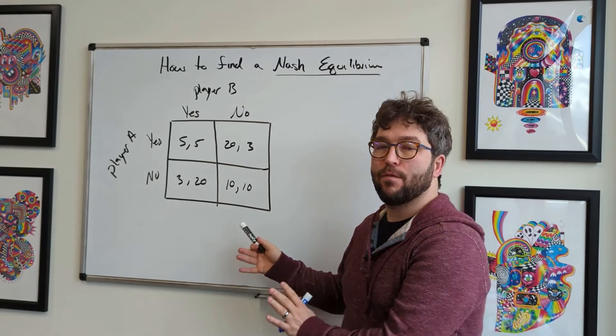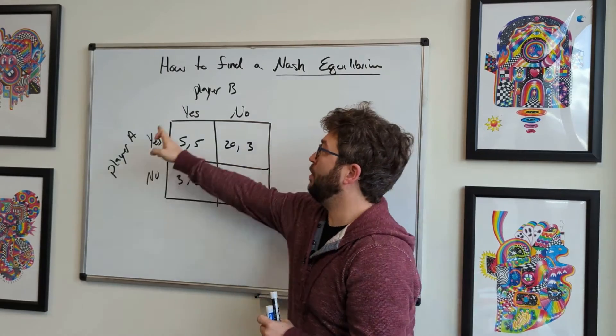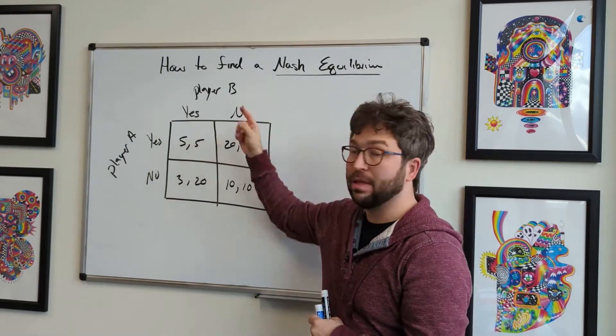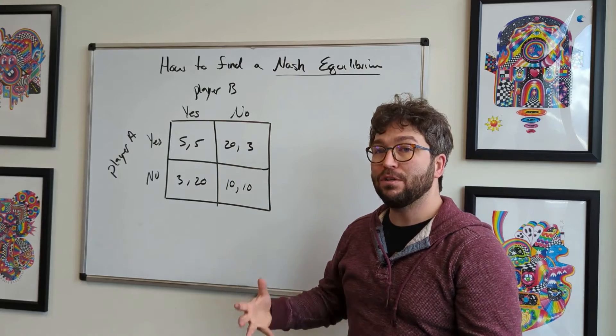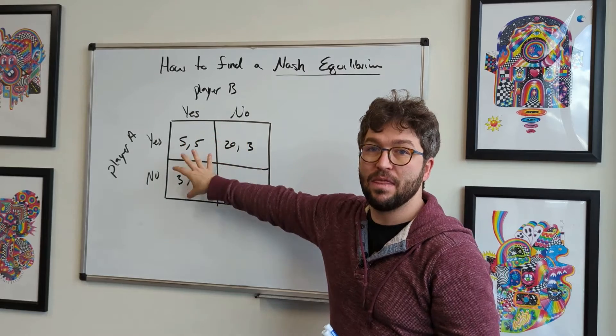Notice I've set up a pretty straightforward two-by-two matrix here where we have two well-defined players, player A and player B, and we know that their well-defined strategies are either saying yes or no, and we have the payoffs here in the middle.